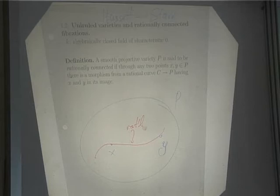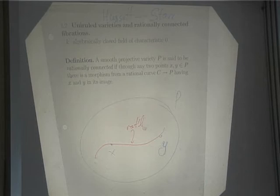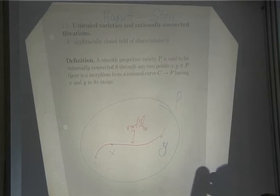Rational connectedness is a really nice property. It's stable under birational equivalence and stable under degeneration and formation: if you have a smooth family of varieties and one fiber is rationally connected, then the other fibers are rationally connected. The only rationally connected surfaces are rational, so for surfaces it's a boring condition. But already for threefolds, it's interesting.